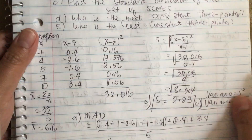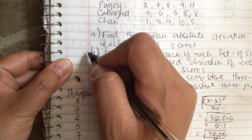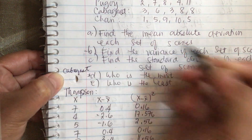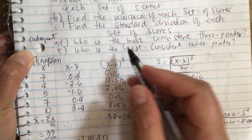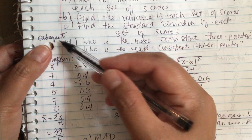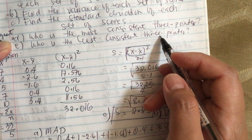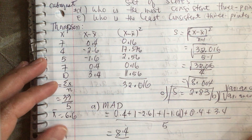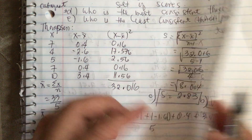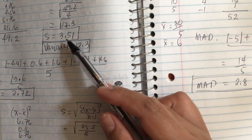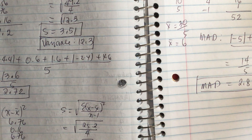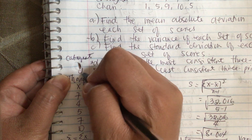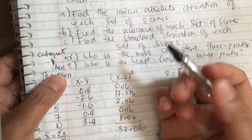Kabagnot is the most consistent three-pointer because he has the smallest standard deviation of 2.51. For the least consistent, we compare: Thompson at 2.83, Pugoy at 3.51, and Chan at 3.61. Chan is the least consistent because he has the highest standard deviation of 3.61.